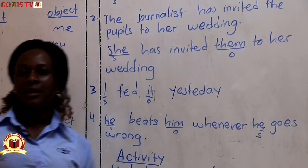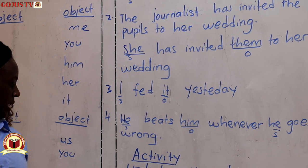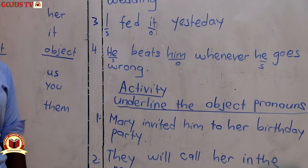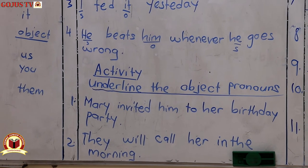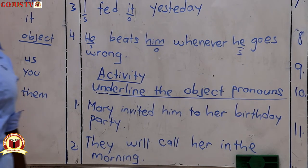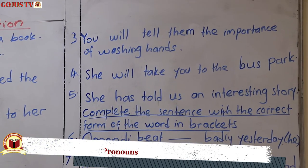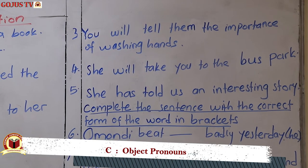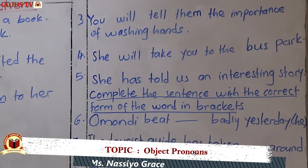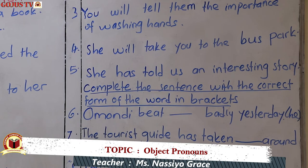Now learners, try out these exercises. Underline or show the object pronouns in each sentence. Number one: 'Mary invited him to her birthday party.' Number two: 'They will call her in the morning.' Number three: 'You will tell them the importance of washing hands.' Number four: 'She will take you to the bus park.' Number five: 'She has told us an interesting story.' In those five sentences, just underline the object pronoun.